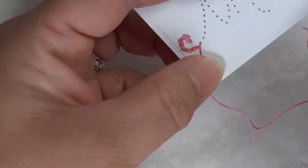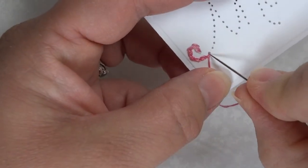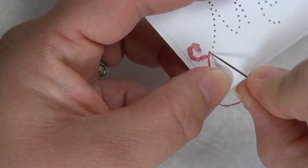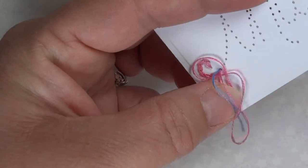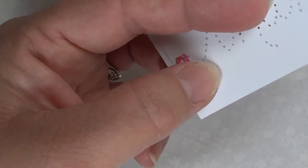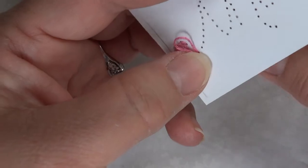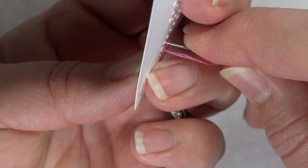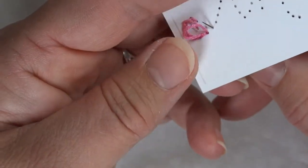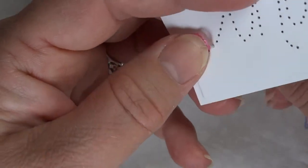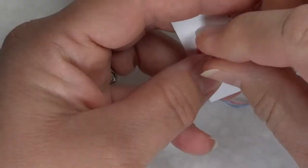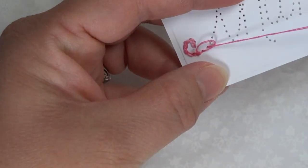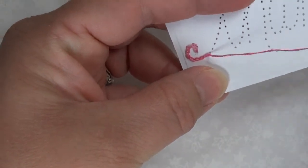Now you pull your thread back so that the hole is open that your last stitch came out of and you go back down through that hole holding a thread until you have a loop. Then you come back up through the next hole into the loop and pull it tight.